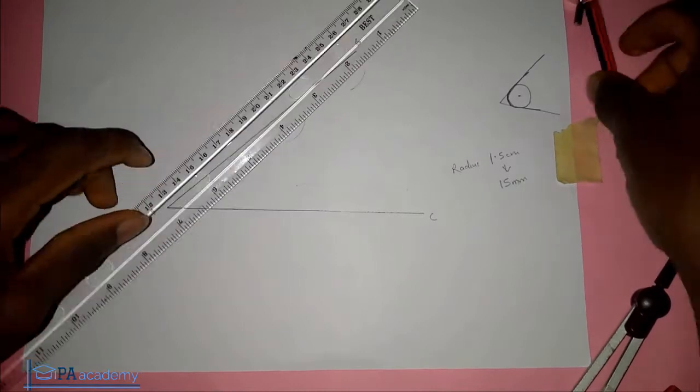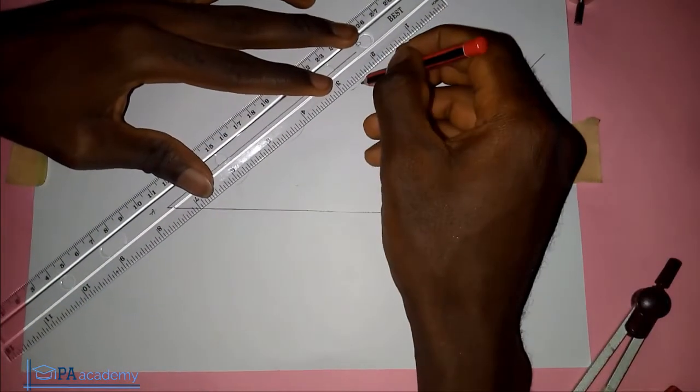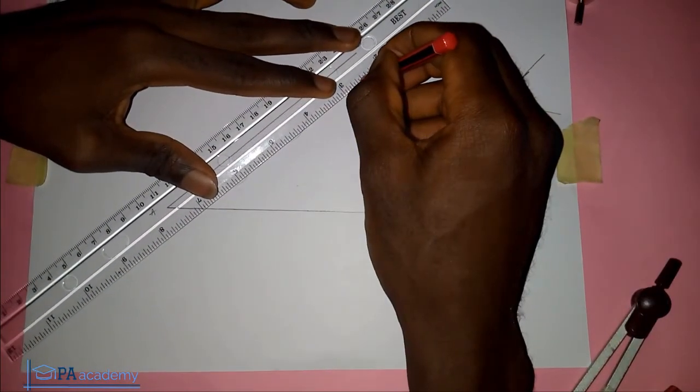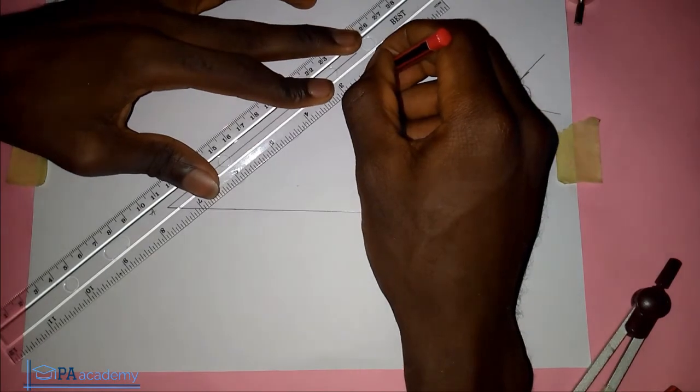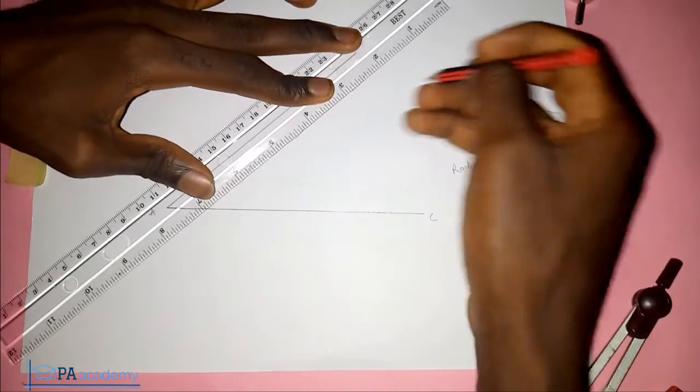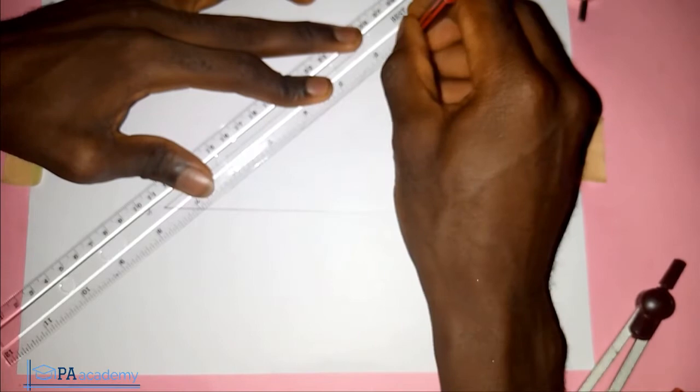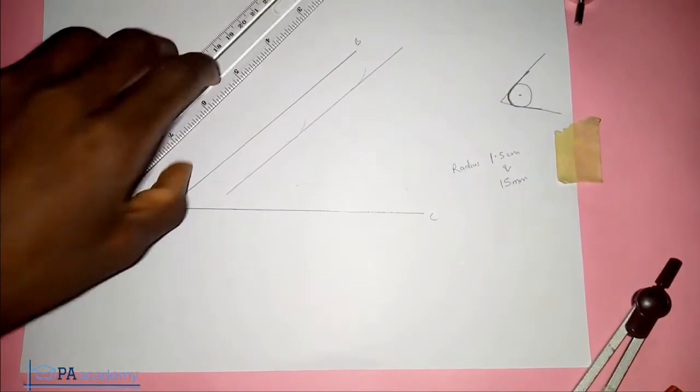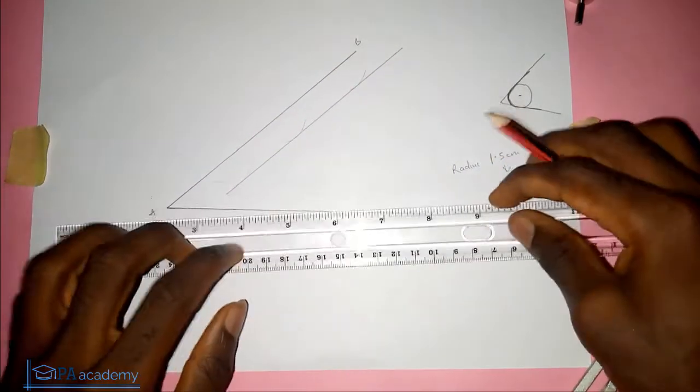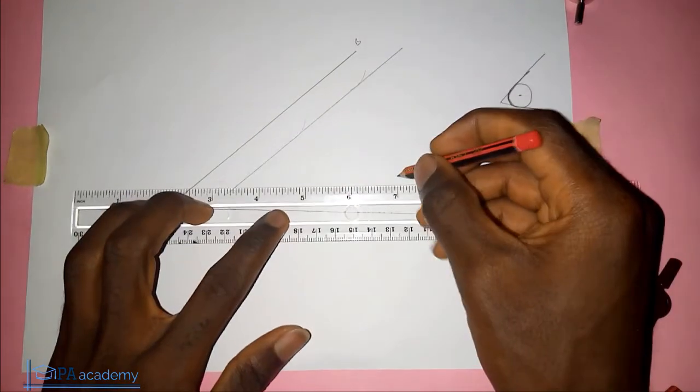So from the top of those arcs we are going to draw a straight line. We'll do the same thing to the arc we drew at this point too.